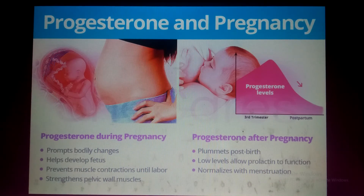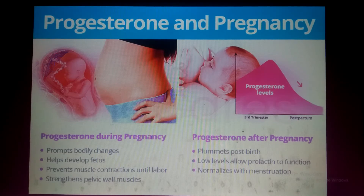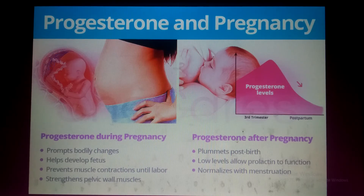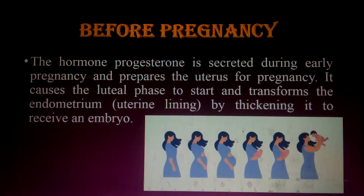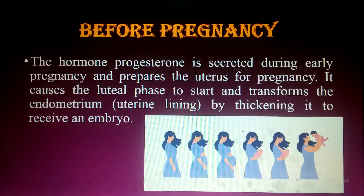Now I will discuss the role of progesterone during and after pregnancy. During pregnancy it prompts bodily changes, helps develop the fetus, prevents muscular contractions until labor, and strengthens pelvic wall muscles. After pregnancy, progesterone levels drop sharply — these low levels allow prolactin to function for nourishment of the baby — then normalize with the return of menstruation.